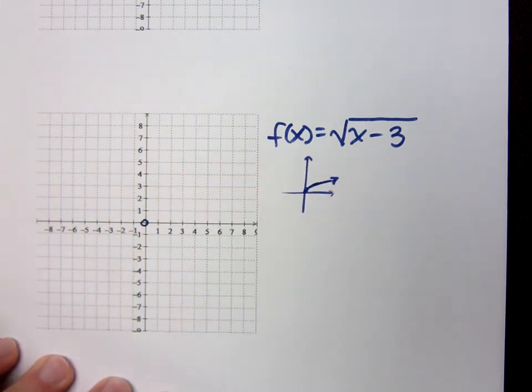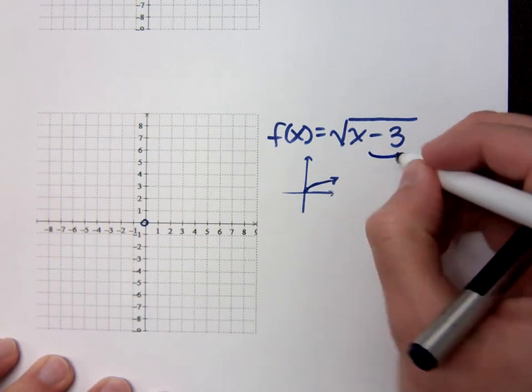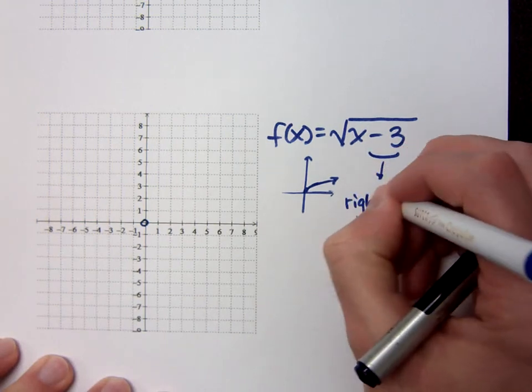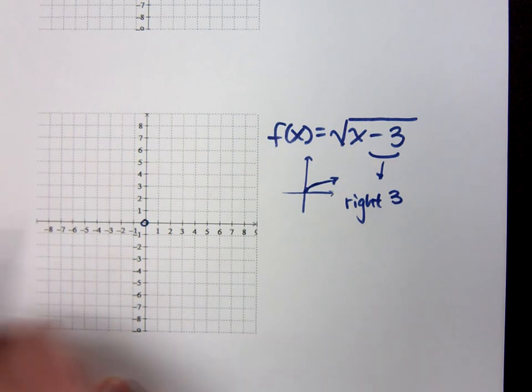So my original function was this guy. Well, before I get there, what do we say this minus 3 does? Or do we say that we go to the right? 3 units.